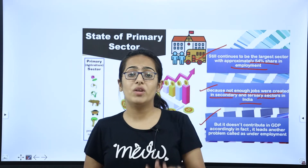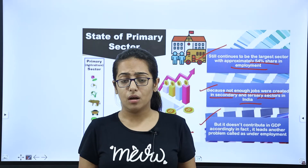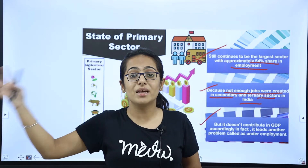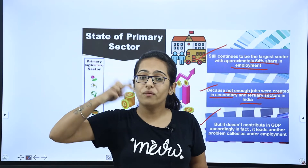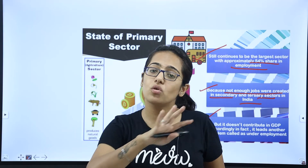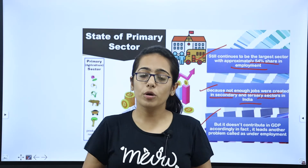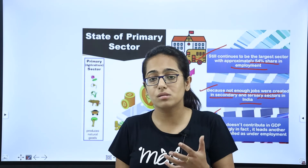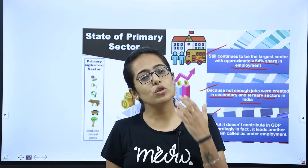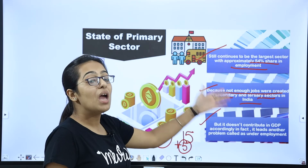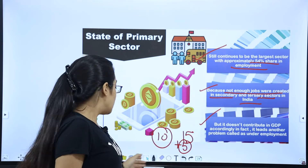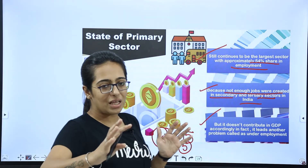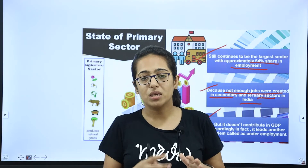In a family, 15 persons are working in one field. The extra 5 don't make a difference to output — whether they work or not, production remains the same. This is disguised unemployment. The primary sector has too many such workers and needs reform. Changes must be made, as the primary sector is in a disheartening state.